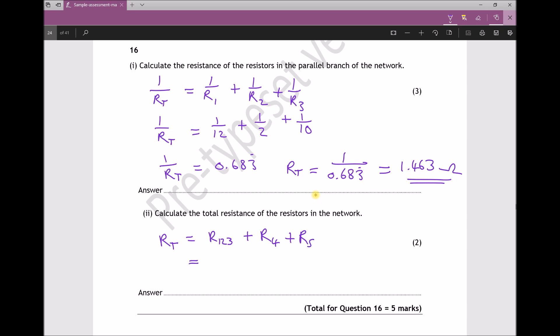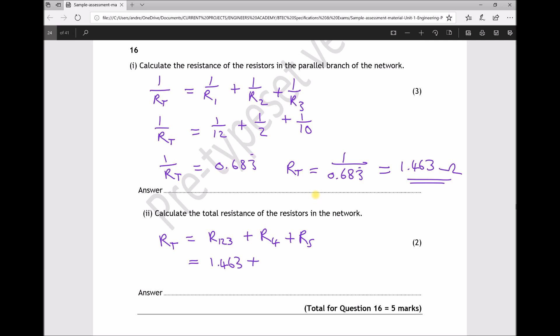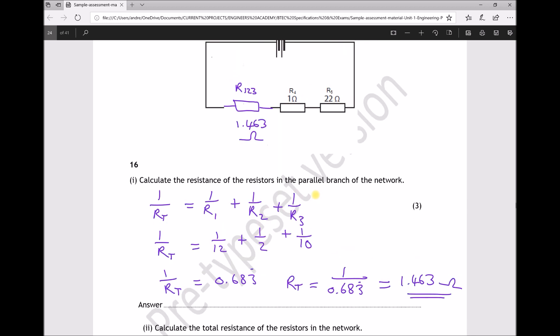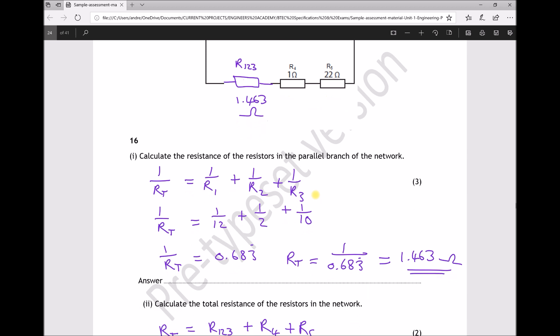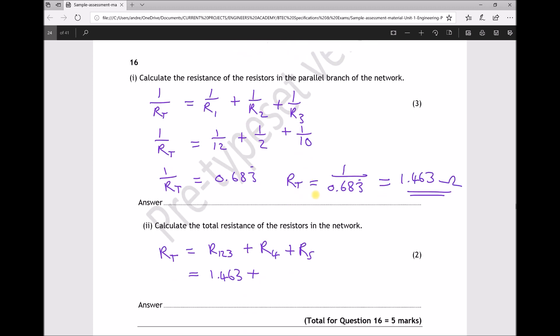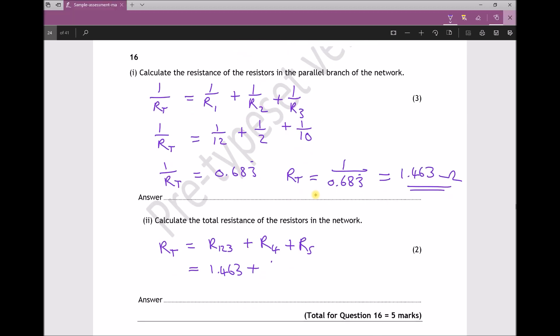Well we know R123 is 1.463, and from the diagram R4 is 1 ohm and R5 is 22 ohms. So 1.463 plus 1 plus 22 equals 24.463 ohms.